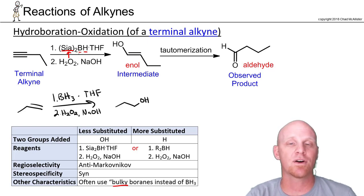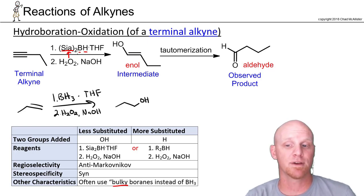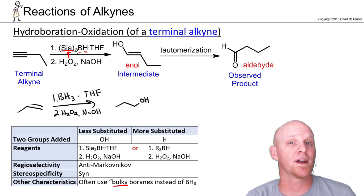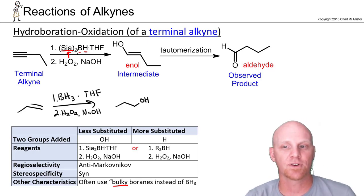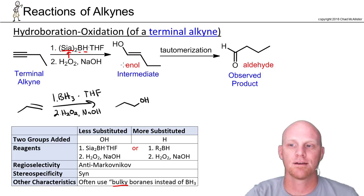The key point with an alkyne is that it has two pi bonds. To prevent it from reacting twice, recall that with alkenes, BH3 reacted with three alkenes, losing one hydrogen each time. But if our boron only has one hydrogen to lose, it can only react once — with one equivalent of the alkyne. So we limit the reaction to a single addition.